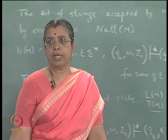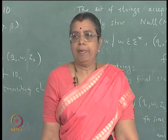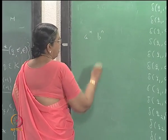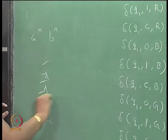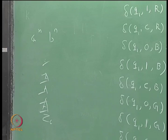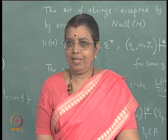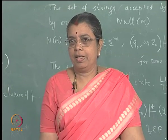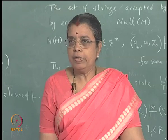Similarly, you can construct pushdown automata as exercises. I would advise you to take some simple problems like a^n b^n — keep on adding a's on top of Z₀, then keep on removing them when you read the b's, and you will get a^n b^n accepted. Also try a string having equal number of a's and b's — a context free language with strings over a and b having equal numbers of a's and b's — try to write down the mappings and see. We will continue in the next class.